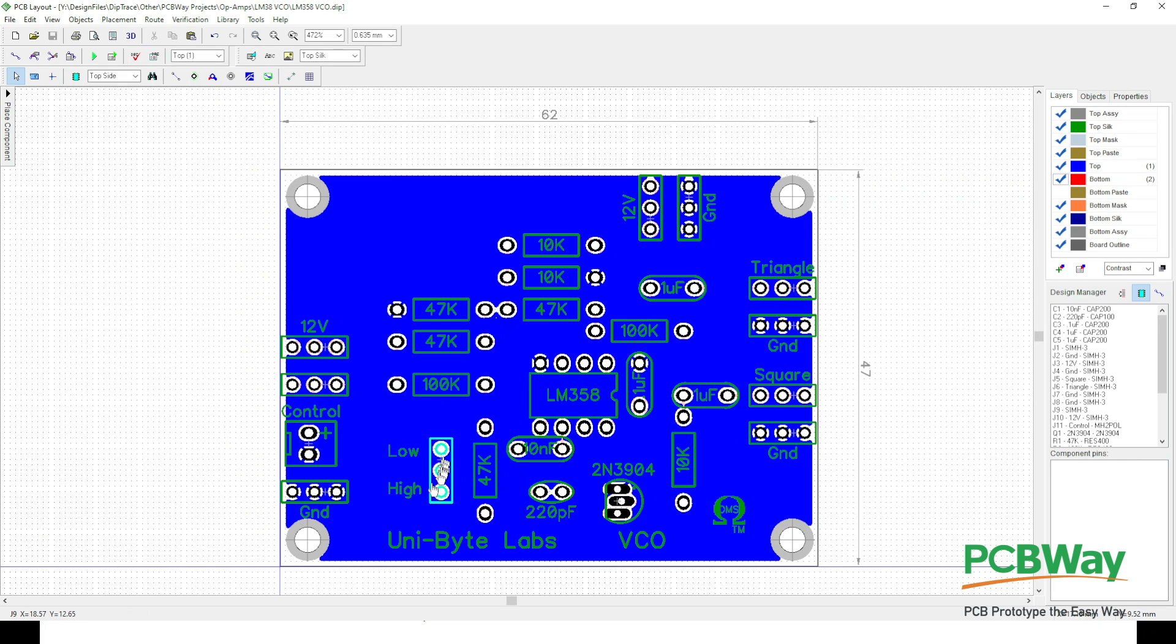And here's our range control here, low and high. They engage these two capacitors here at 10 nanofarads to 220 pF. And this is our square wave output, our triangle output, and our power input over here.